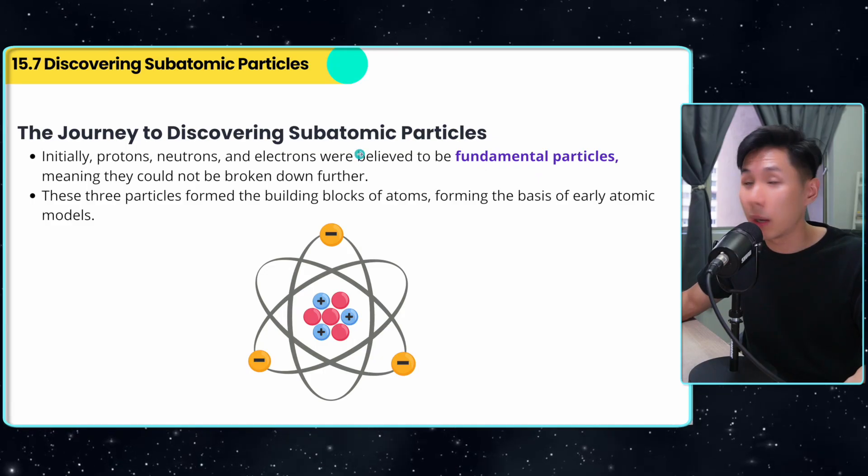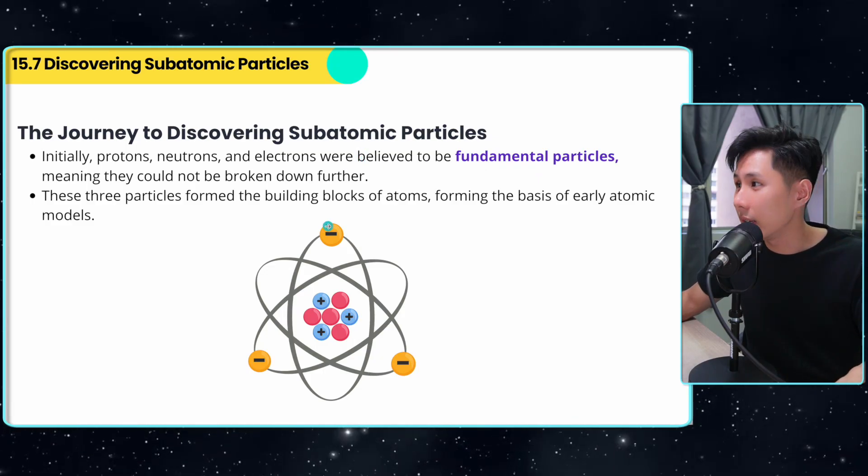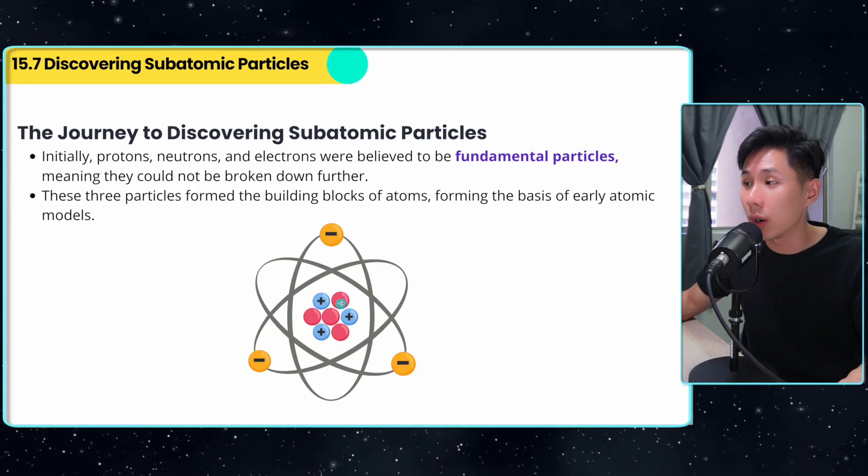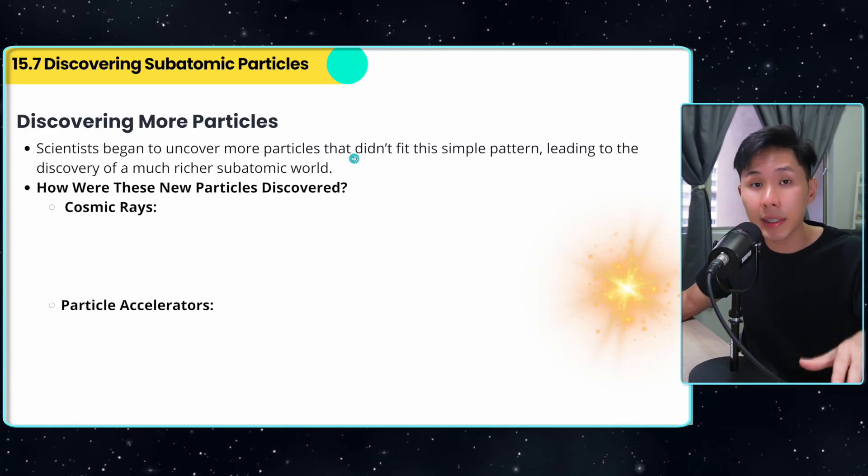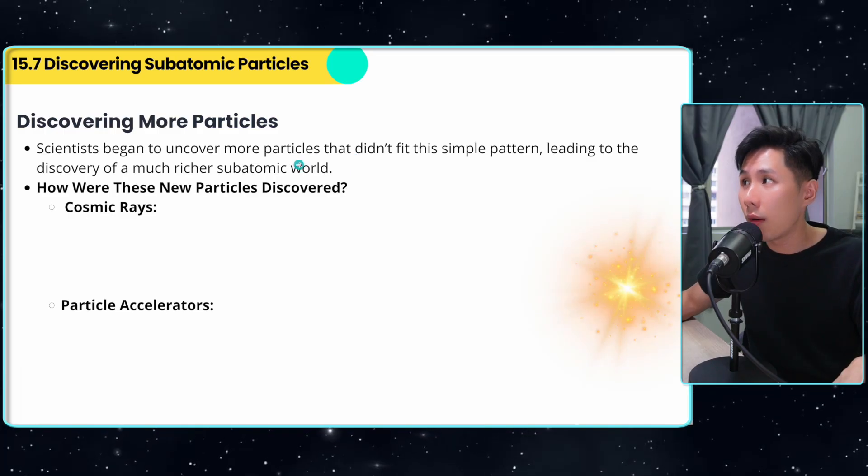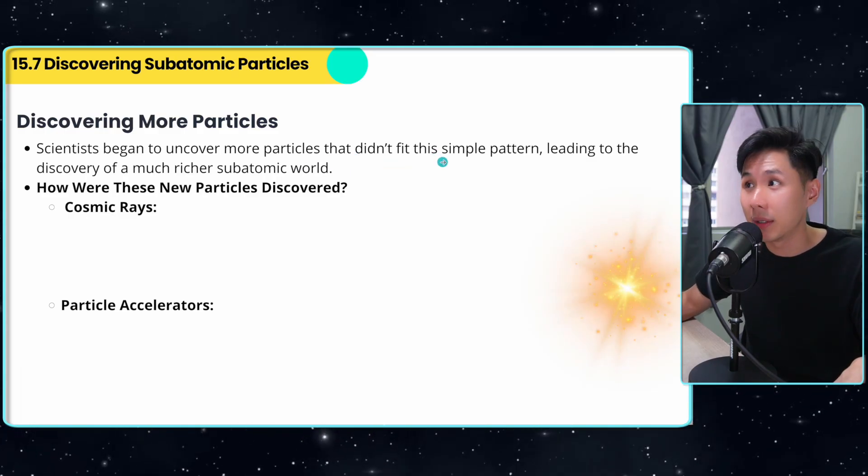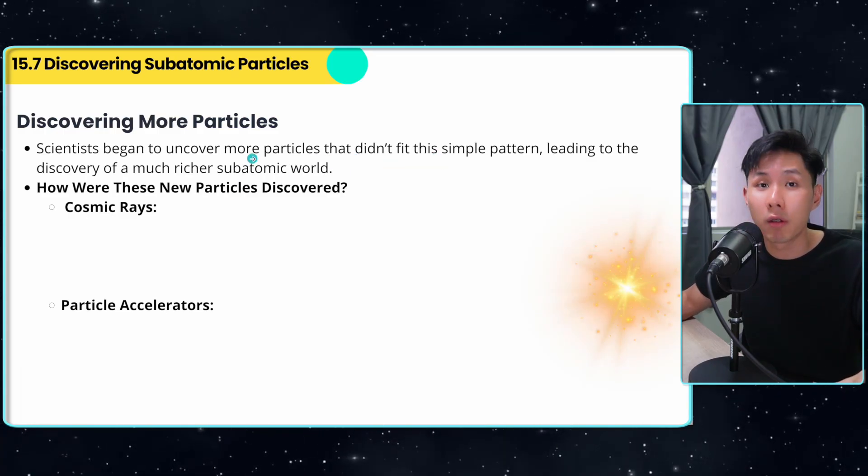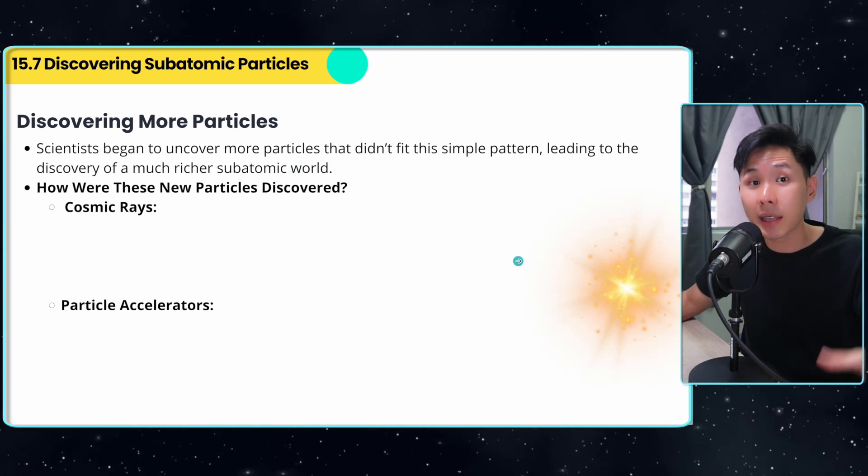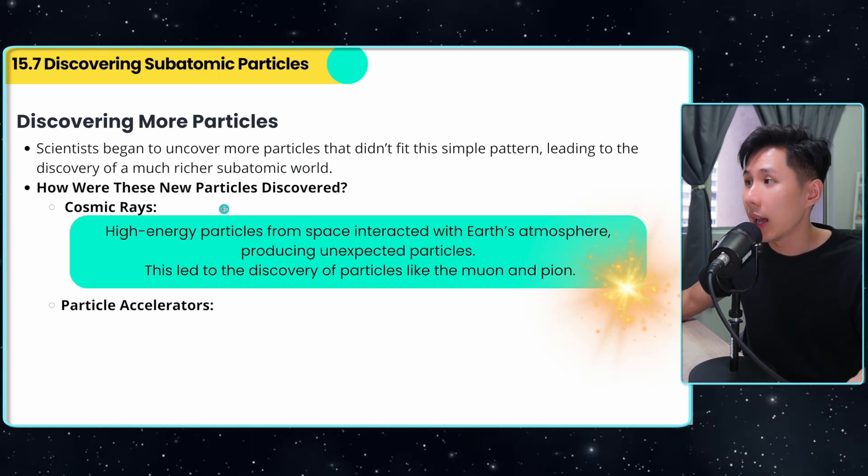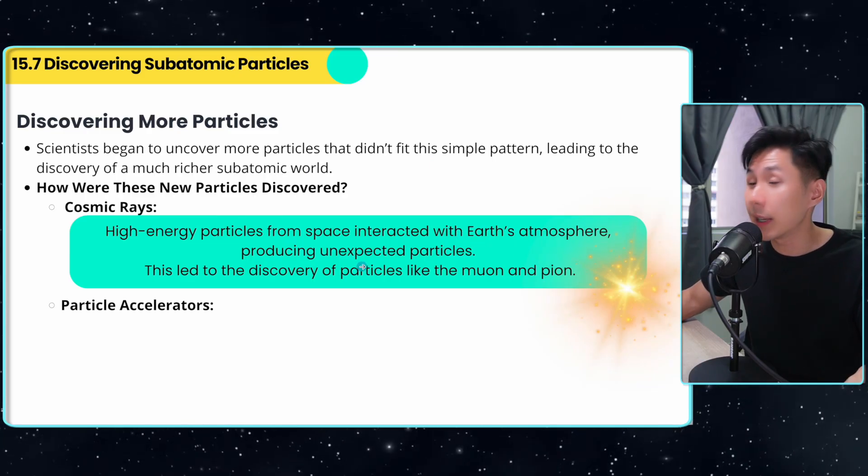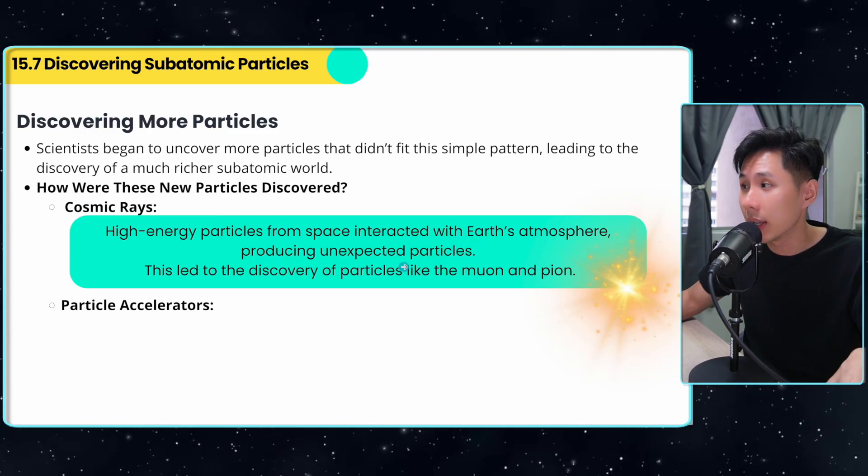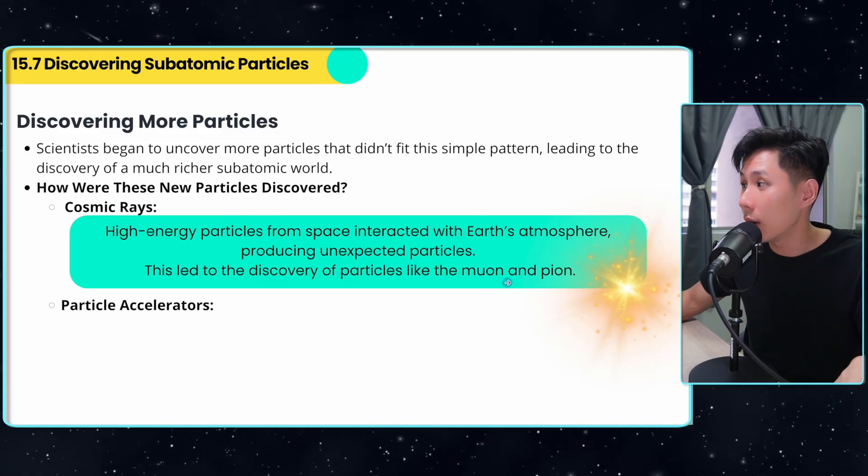Now, the last part of the chapter, we're going to talk about subatomic particles. Initially, electrons, protons, and neutrons were all considered fundamental particles because they are so small. Scientists began to uncover more particles that didn't fit this simple pattern. They realized there is a much richer subatomic world. How they discovered it is through cosmic rays - high energy particles from space interacted with Earth's atmosphere, producing unexpected particles. They were captured by scientists as muons and pions.